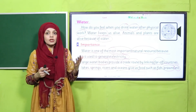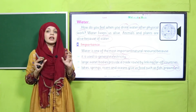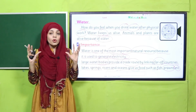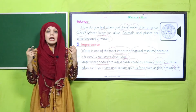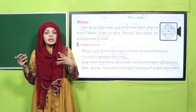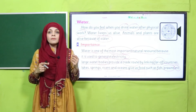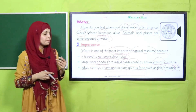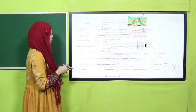Ships travel across oceans and seas, and things can move from one place to another. Water is also a great source of food for us — we get fish, prawns, and other edibles from the sea and water.